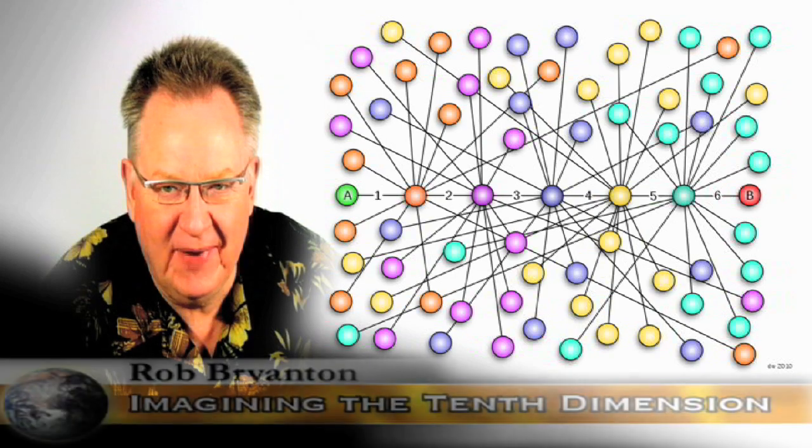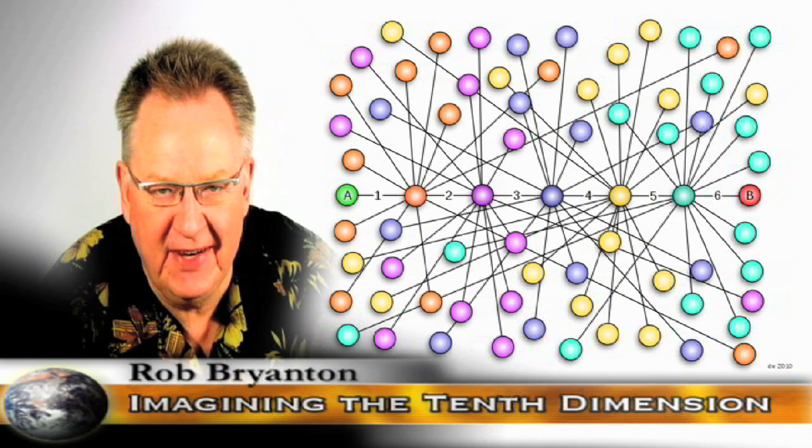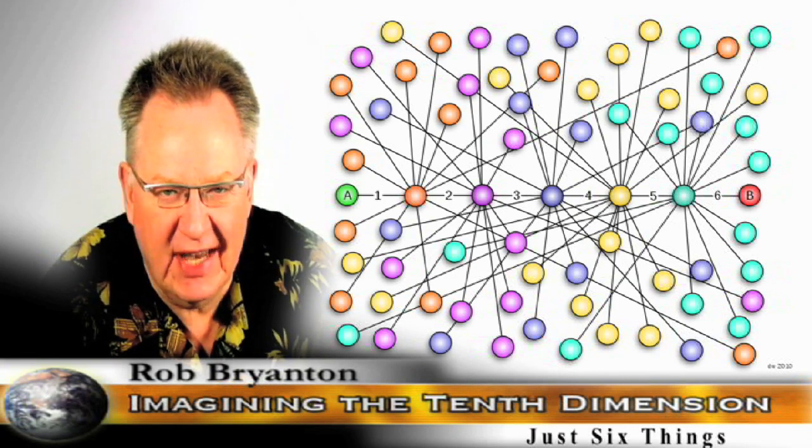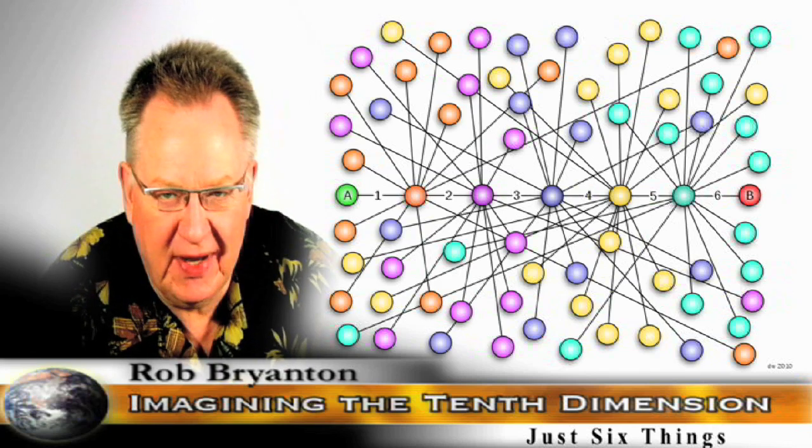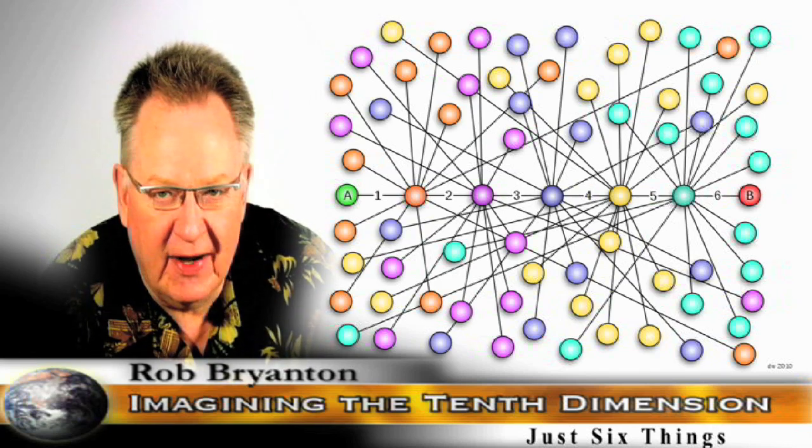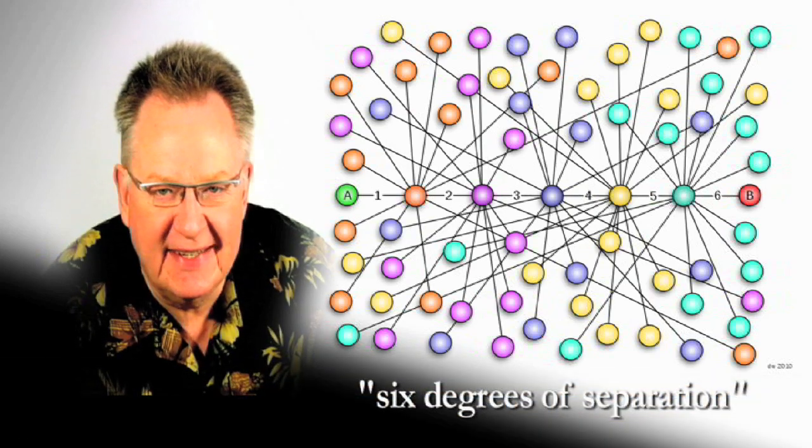Hi everybody, and here we are again, Rob Bryanton with the Imagining the Tenth Dimension video blog. Today's entry is called Just Six Things, and the image we're looking at behind me comes from Wikipedia. It's depicting the concept of the six degrees of separation.